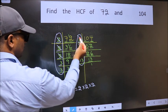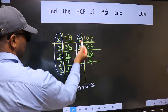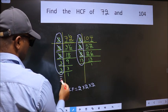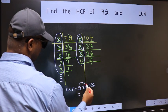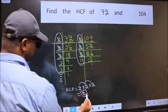Next number 3. Do we have 3 here? No. Next number 3. Do we have 3 here? No. No more numbers are left out. So our HCF is 2 into 2, 4 into 2. 8 is our HCF.